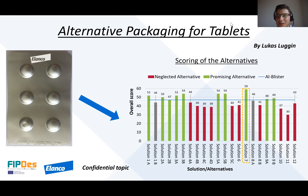My master thesis was written in collaboration with Elenco Animal Health, especially with their global packaging development department. For those who do not know what blisters are, here on the left you can see a picture of a typical aluminum blister. Blisters are widely used in the industry and have really good product protection. They also fulfill the other packaging requirements to a high extent.